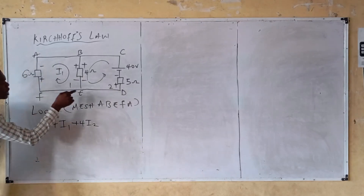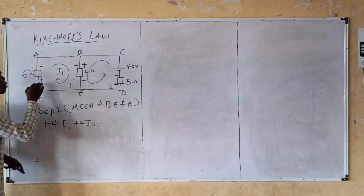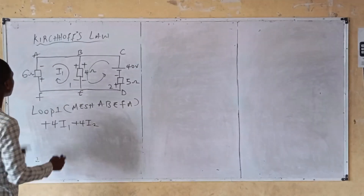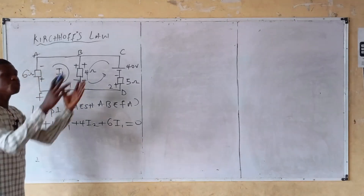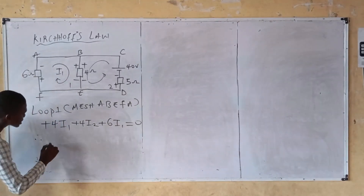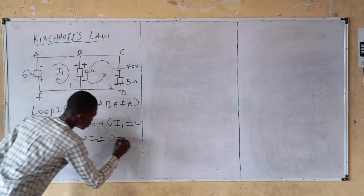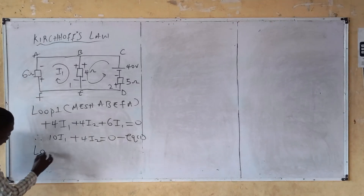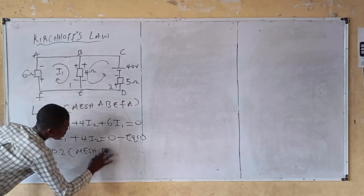Moving on: F-E has no circuit element. F-A has a six ohm resistor — going from positive to negative means a voltage gain, so positive six I1. Setting the sum equal to zero (KVL states the algebraic sum of voltages in a closed loop equals zero), collecting like terms gives: ten I1 plus four I2 equals zero. Call this equation one.